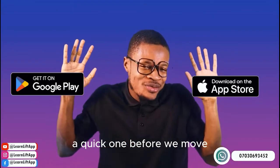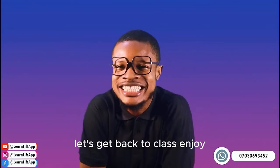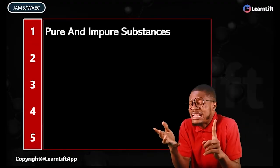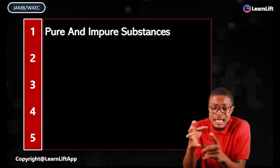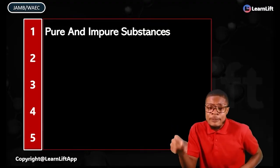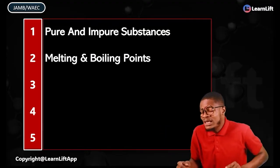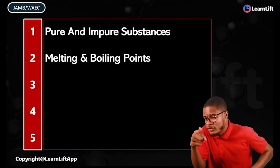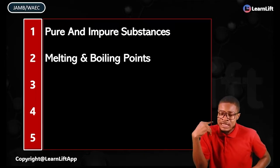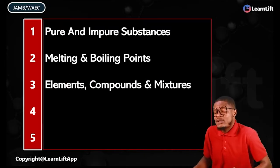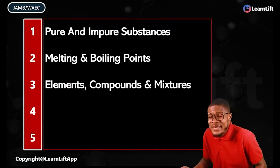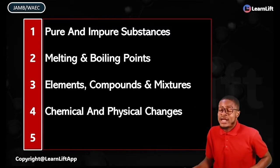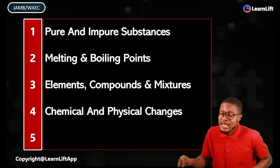Now, let's get into the five areas. Number one: pure and impure substances — I'm going to cover everything about pure substances and impure substances. Number two: melting and boiling points — very important. Number three: elements, compounds, and mixtures — all covered thoroughly.